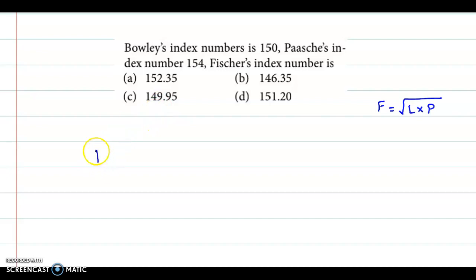Now we start with the Bowley's index number. We know that Dorbish Bowley's index number is obtained as Laspeyres index number, plus Paasche's index number, divided by 2.